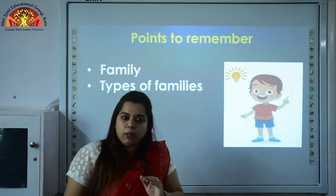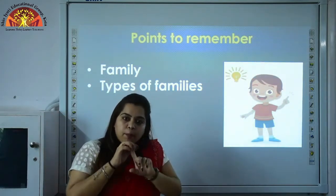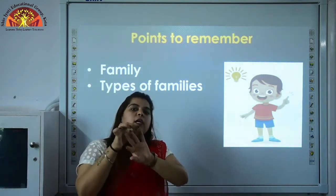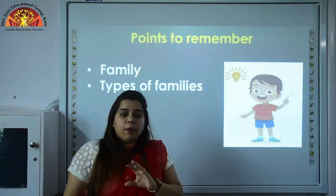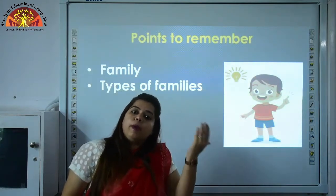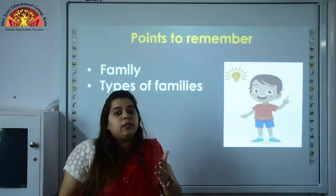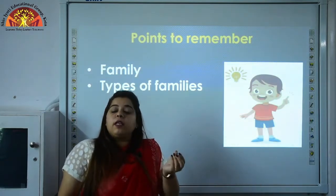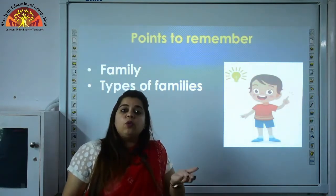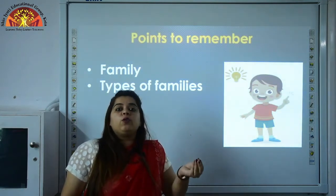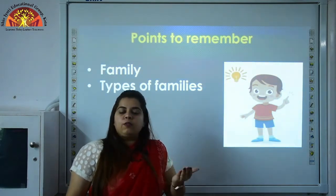Next is joint family. Joint means large. In a joint family, grandparents, parents, uncles, aunts and siblings live. Grandparents are your parents' parents — they are old and wise. They love you, tell you stories and bring gifts for you. Siblings are your cousins who share toys with you, have fun with you, care for you and help you when you need them. Joint family is a large family in which all these people live.